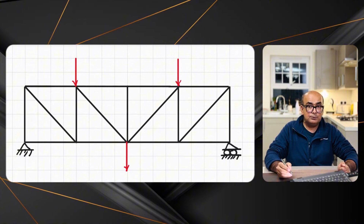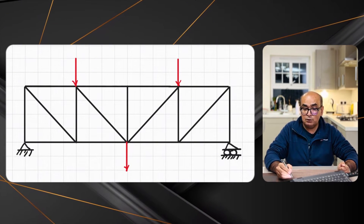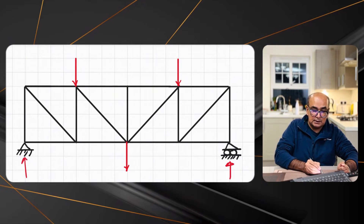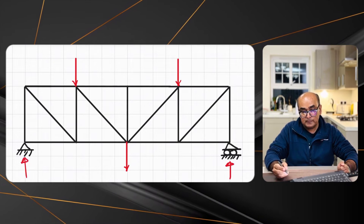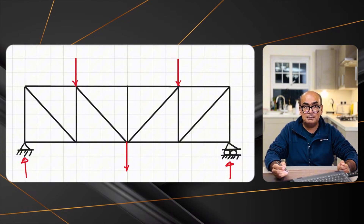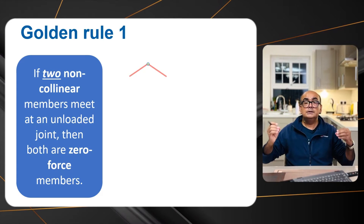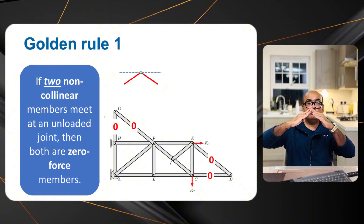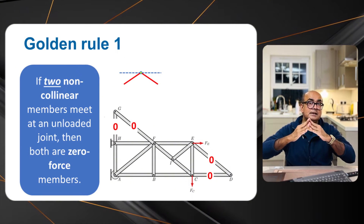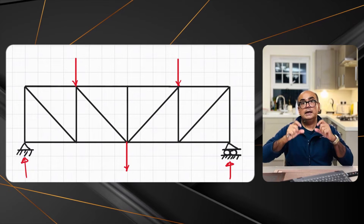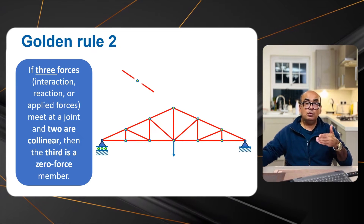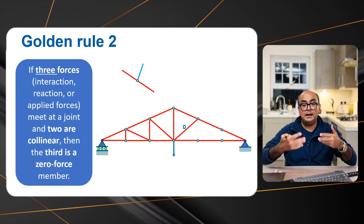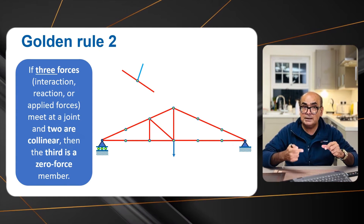On the right side we have a roller support; on the left we have a pin support. A roller support will not have any horizontal reaction — we will just have vertical reactions at both supports. First, we need to identify zero force members. From the golden rules: if two members are connected at an angle less than 180 degrees the force is zero; also, when two co-linear members meet and a third member is attached, the force in that third member has to be zero. Can you identify that member here?